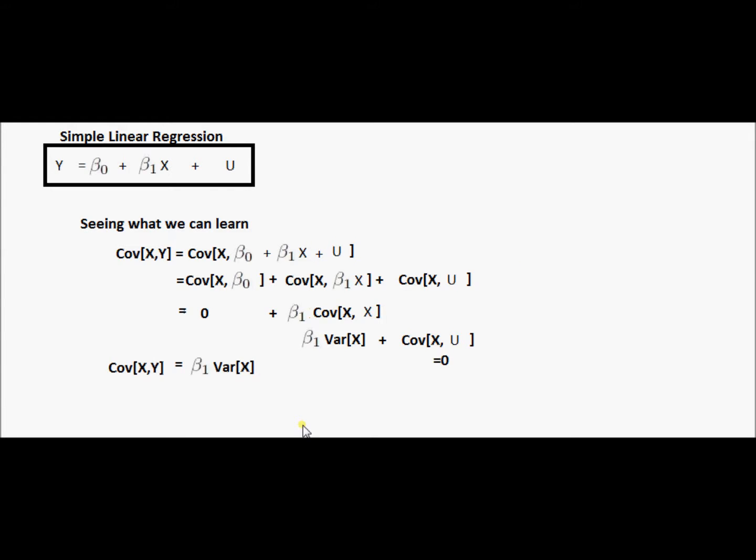So now all we have left is beta one times the variance of x equals the covariance of x with y. We could just divide by the variance of x, and now once we've divided by the variance of x, we have an expression for our slope coefficient in our regression model.